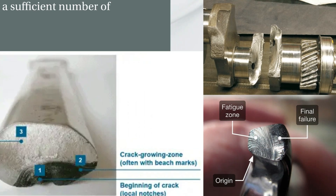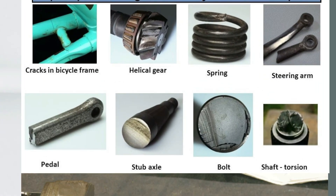These are a number of examples of fatigue failure. You can see cracks in a bicycle frame, helical gear, spring, steering arm, pedal, axle, bolt, shaft, and other components.